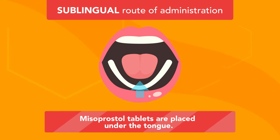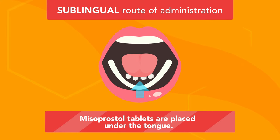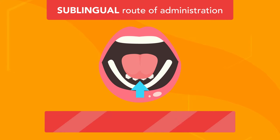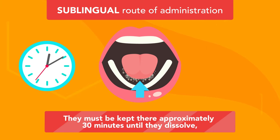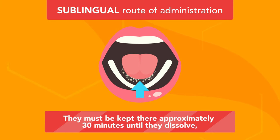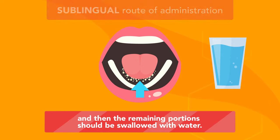Sublingual route of administration: Misoprostol tablets are placed under the tongue. They must be kept there approximately 30 minutes until they dissolve, and then the remaining portions should be swallowed with water.